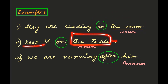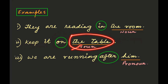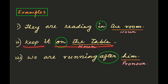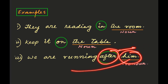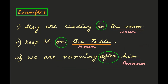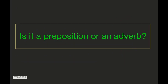'Table' is a noun and 'on' is used before it to connect it with the rest of the sentence, so 'on' is a preposition. In 'We are running after him,' 'him' is a pronoun and 'after' is used before it to connect it with the rest of the sentence. So in these three examples we have three prepositions: number one 'in,' number two 'on,' and number three 'after.'